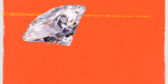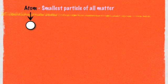So let's take the atom first. Here is a picture of a diamond. A diamond is a type of pure substance, meaning it's only made up of one type of atom or one type of particle. That little white circle is the smallest particle of that diamond, which we would call an atom. One of the ways we can define an atom is that it's the smallest particle of any type of matter.